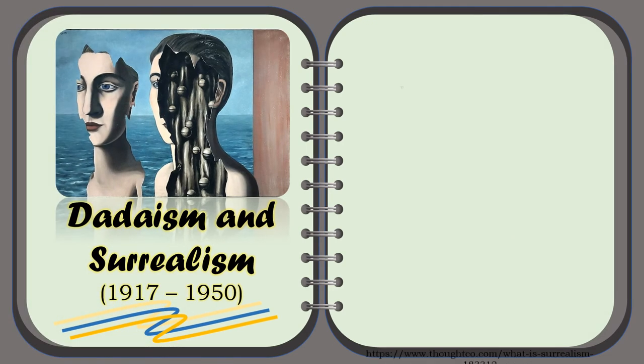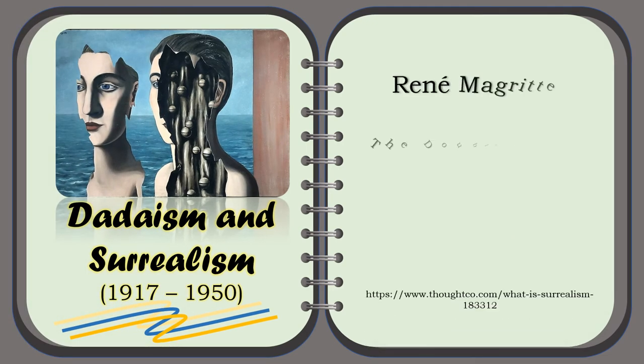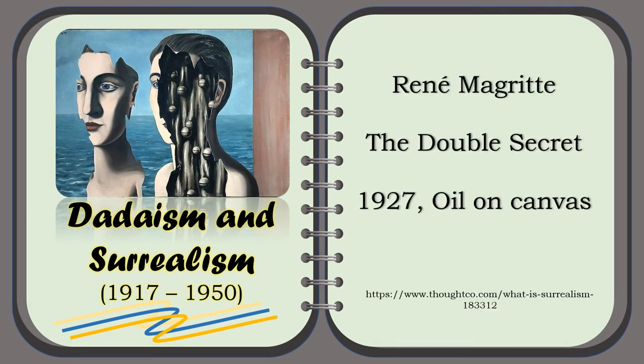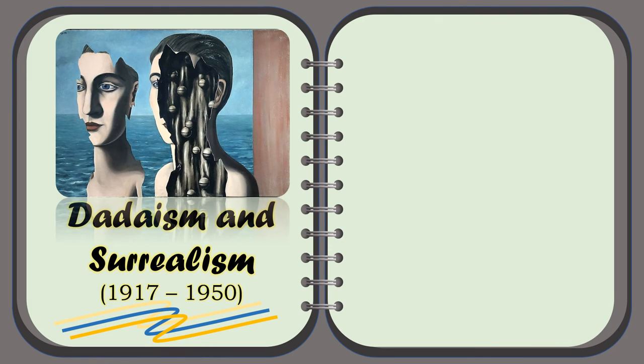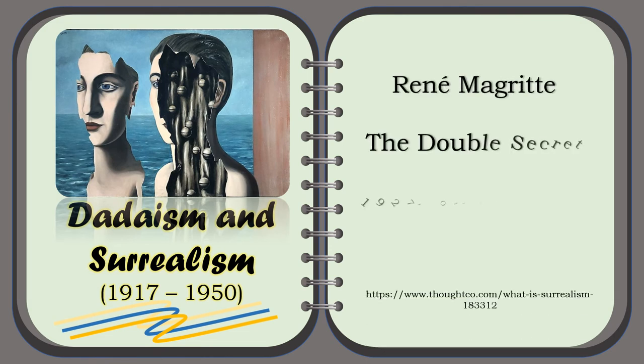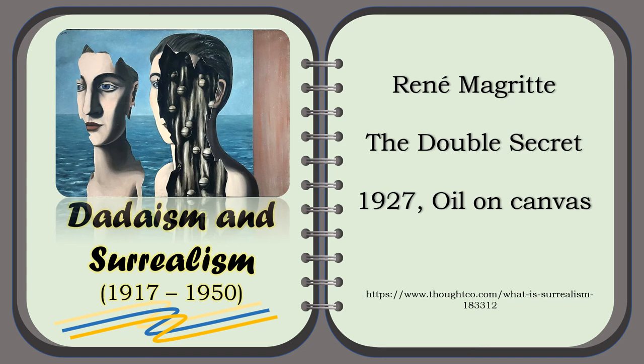For example, an oil painting of René Magritte, entitled The Double Secret, in 1927.